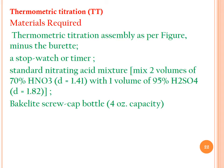For the determination of benzene in cyclohexane, the materials required are: a thermometric titration assembly as per the figure, a burette, a stopwatch or timer, a standard nitrating acid mixture prepared by mixing two volumes of 70% nitric acid (density 1.41) with one volume of 95% H₂SO₄ (density 1.82 g/cc), and a Bakelite screw-cap bottle of four-ounce capacity.